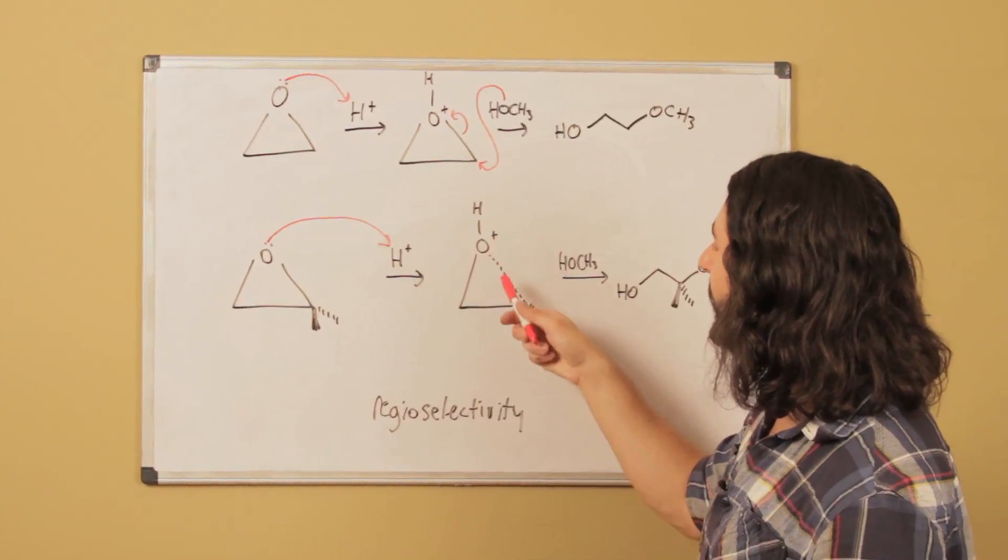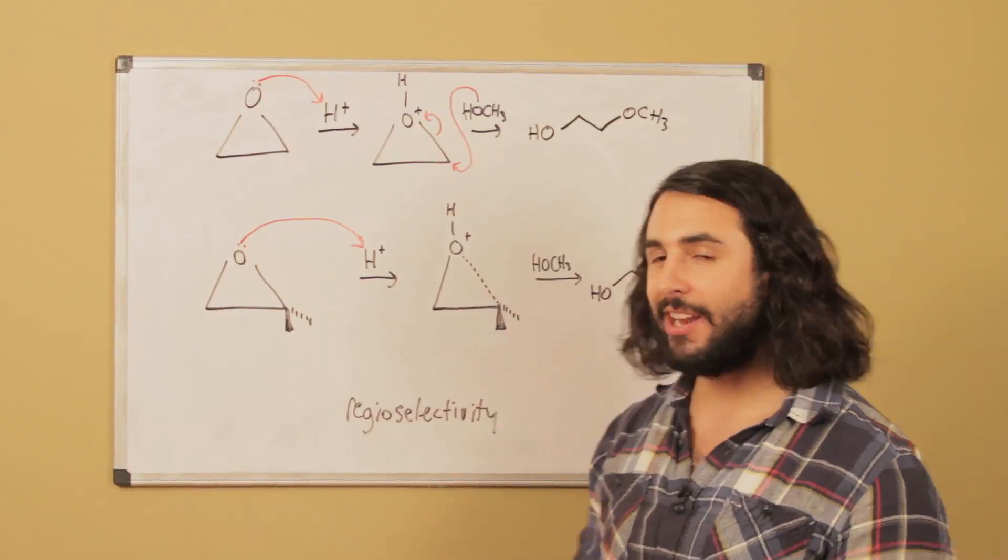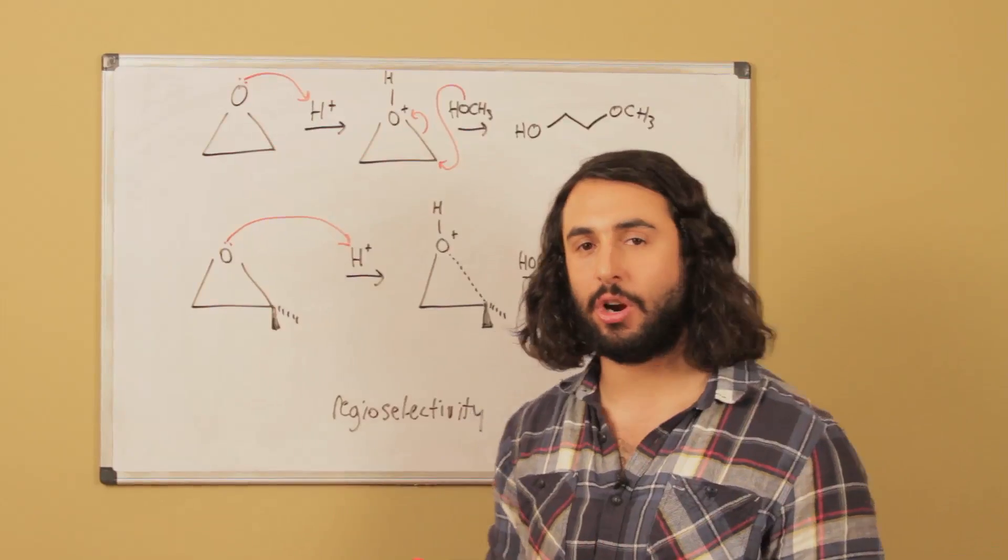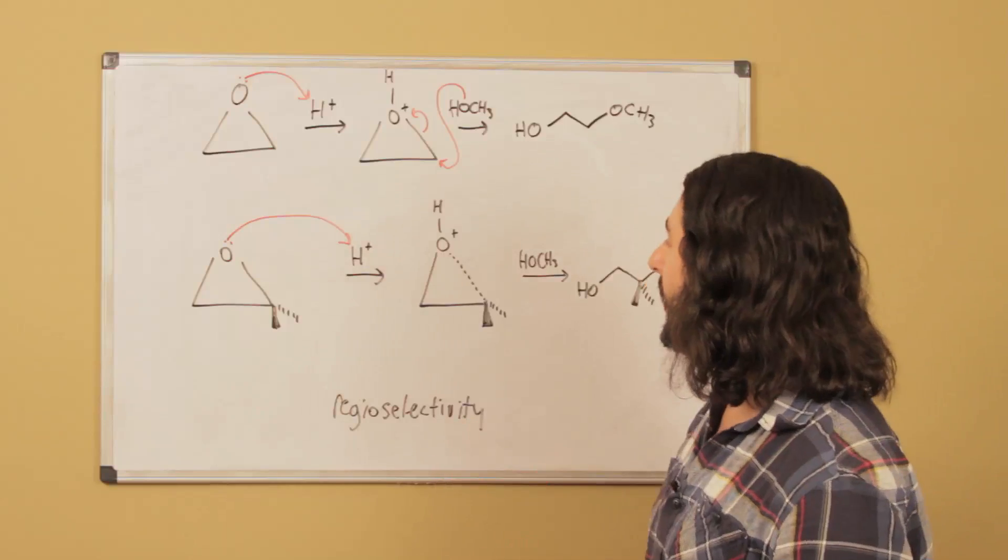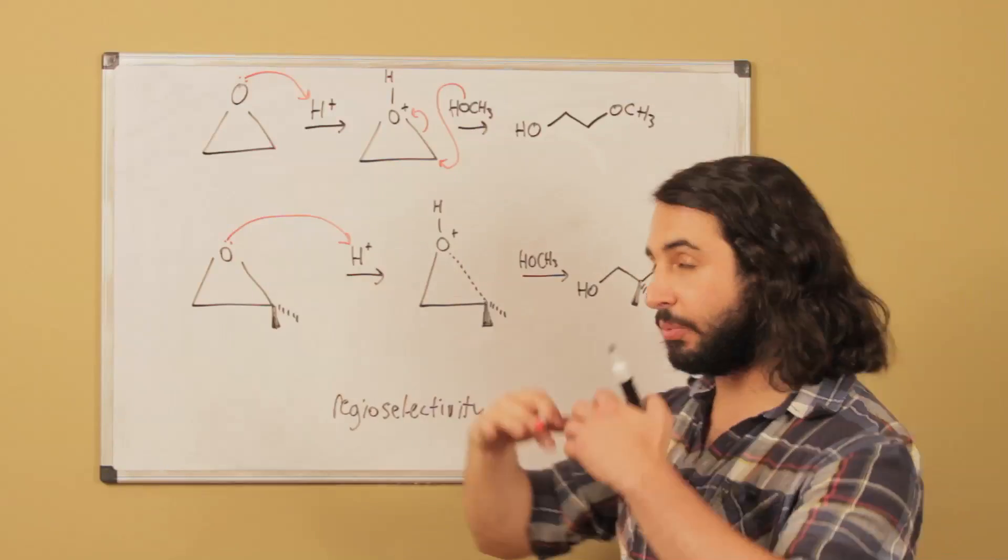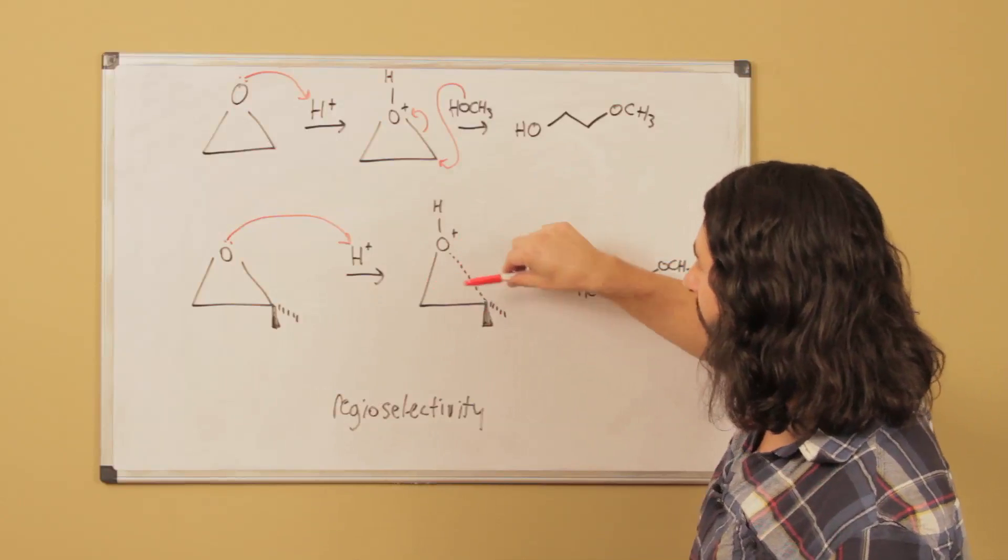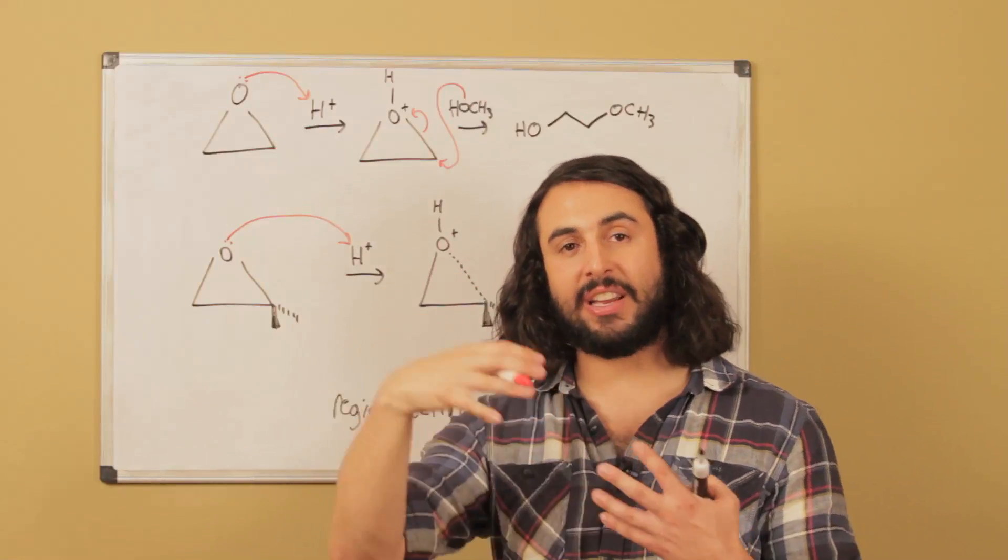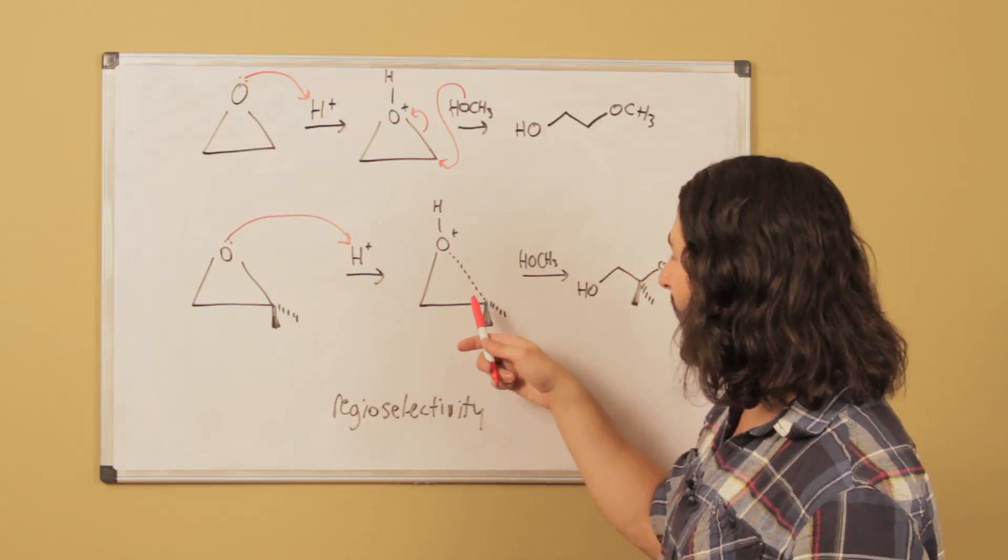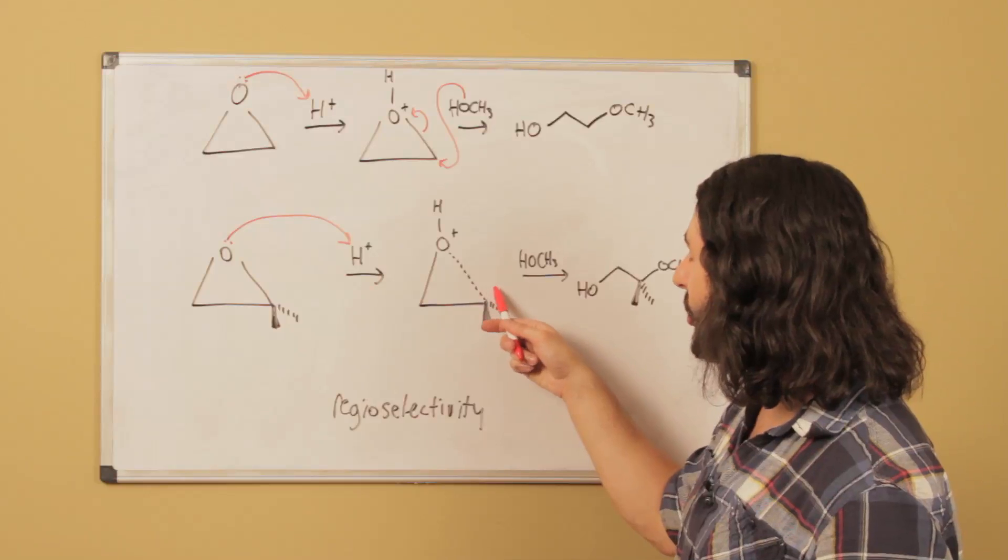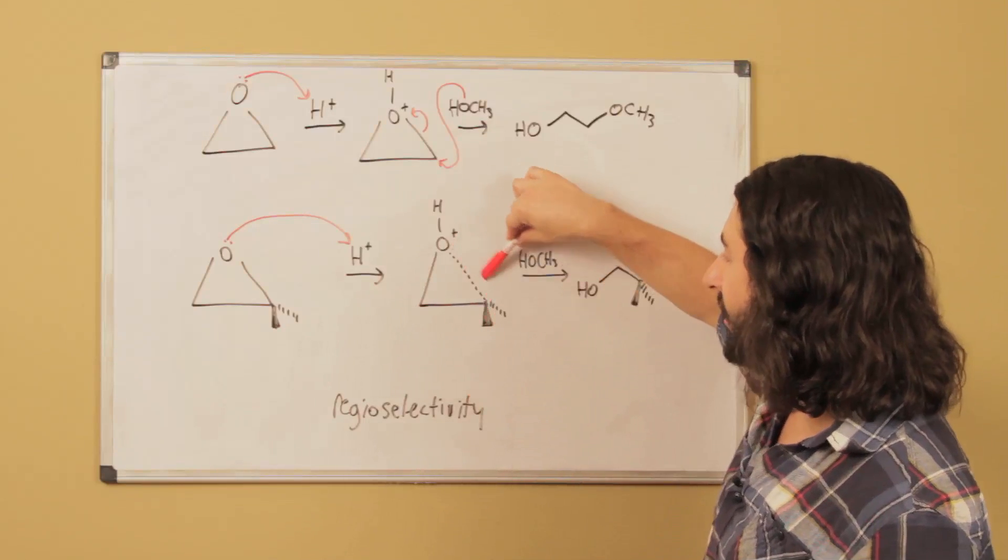Once we protonate this is going to be very happy to open up because a carbon atom can better accommodate a positive charge than an oxygen atom, because the carbon is more electropositive. It's going to want to get that positive charge, so this ring is really ready to open up. That means that one of these two bonds is going to begin to weaken.